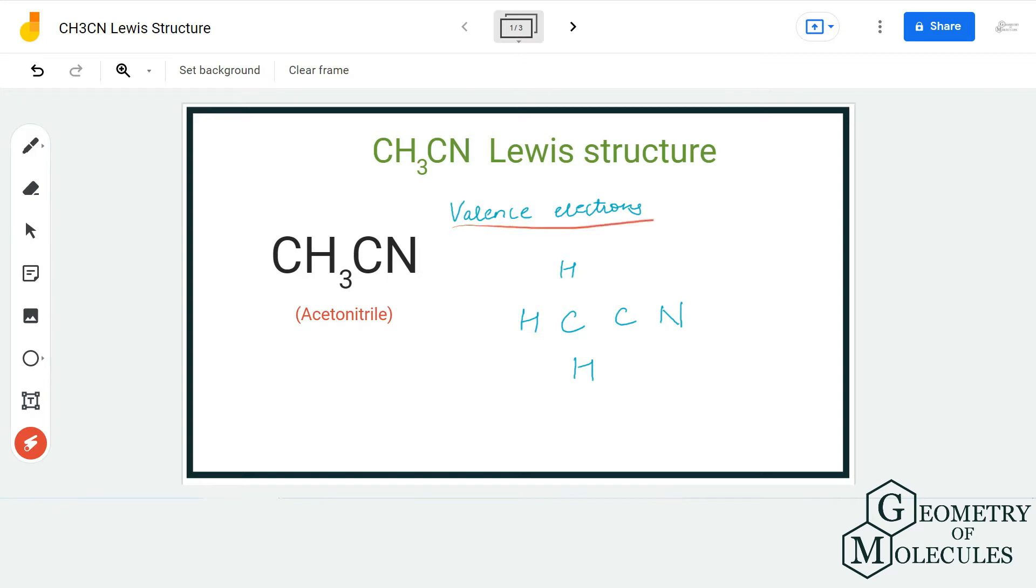Here we have one carbon atom which has four valence electrons. Each hydrogen atom has one valence electron, and we'll multiply this number by 3. We have one more carbon atom which has four valence electrons and a nitrogen atom which has five valence electrons. So in total we have 16 valence electrons.